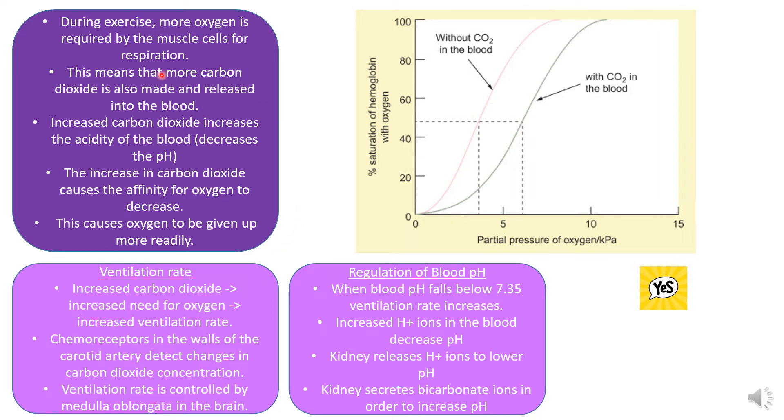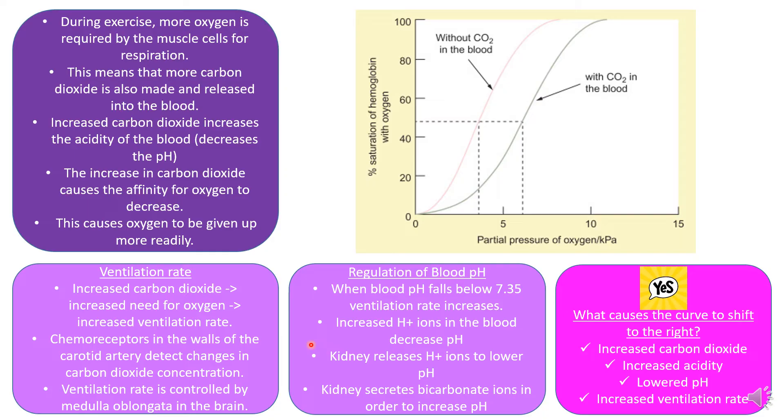If the blood pH falls below 7.35, therefore it gets more acidic, then the ventilation rate increases because the body recognizes that there must be more carbon dioxide. There's also increased hydrogen ions in the blood, which decrease the pH. The way that we can raise pH is the kidney releases hydrogen ions and secretes bicarbonate ions to increase pH. The curve shifts to the right if there's increased carbon dioxide, increased acidity, lowered pH, or increased ventilation rate.